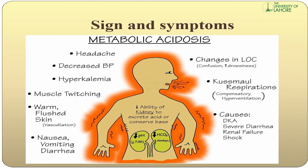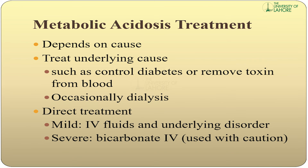Signs and symptoms of metabolic acidosis include headache, decreased blood pressure, hyperkalemia, muscle twitching, warm flushed skin, nausea, vomiting, and diarrhea. Causes include DKA, severe diarrhea, renal failure, and shock.